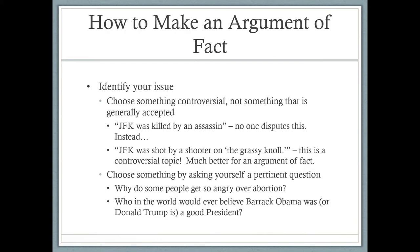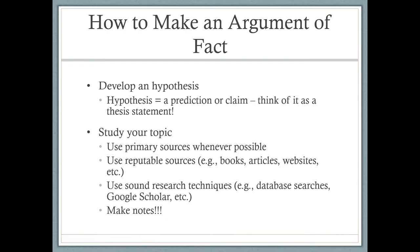The first thing you've got to do is identify your issue — pick something controversial, pick something that means something to you. The second step in making an argument of fact is you've got to develop your hypothesis, which is a prediction or a claim. Think of your hypothesis as a thesis statement. Once you find your controversial topic and create a hypothesis thesis statement, then you study your topic. Go and study your topic until your eyes turn red. Use primary sources wherever you can, always use reputable sources — books, articles, websites, journal articles. Use sound research techniques: database searches, Google Scholar. Make all your notes and study your topic inside and out.